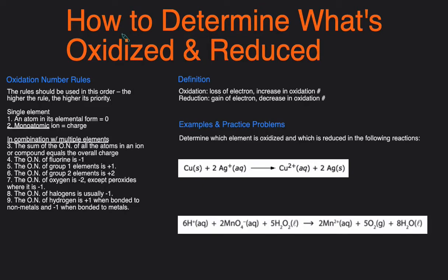Hey guys, it's Michael from Conker Chemistry, and today's video will be talking about how to determine which element is oxidized and which element is reduced in a redox reaction. If you're rusty on determining oxidation numbers, please check out my video where I go over that in detail, because we're going to be using all those rules and the technique in this video. Check that out first and then come back to this video.